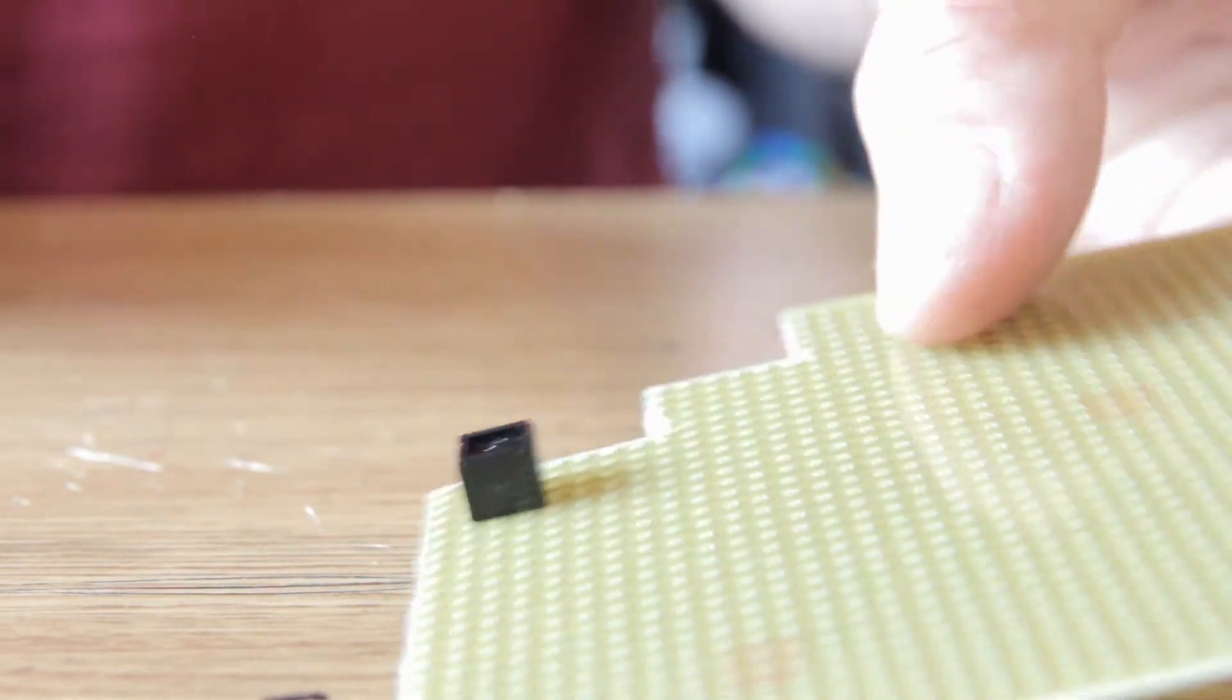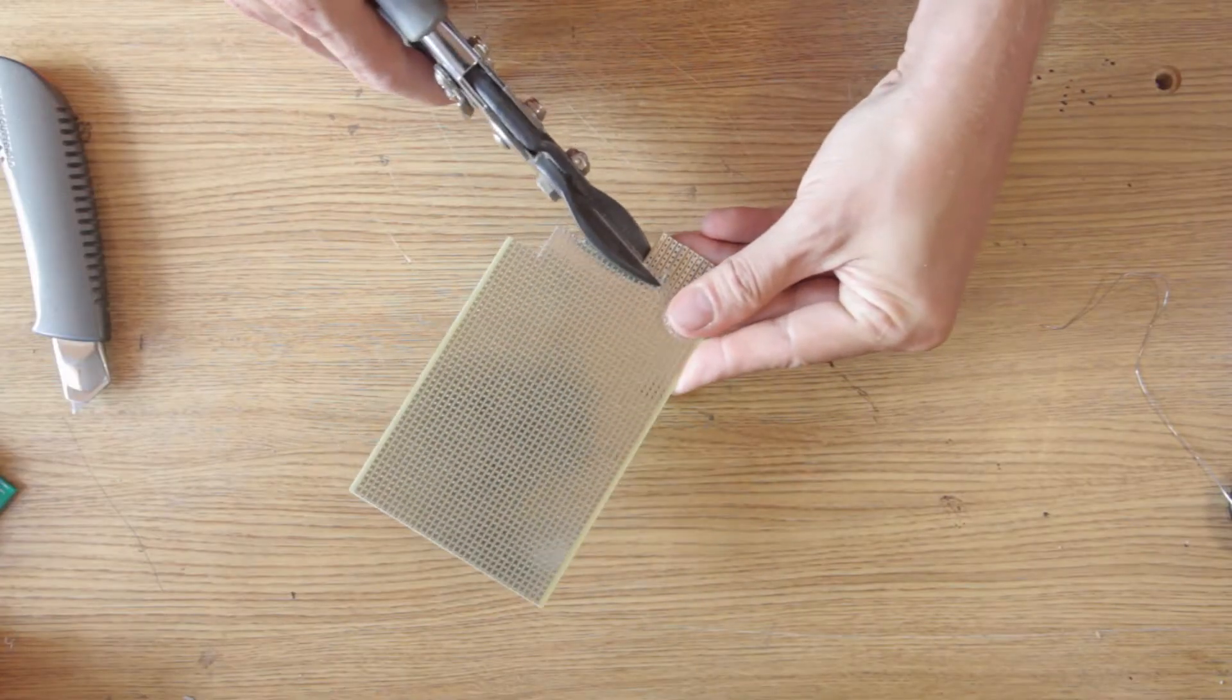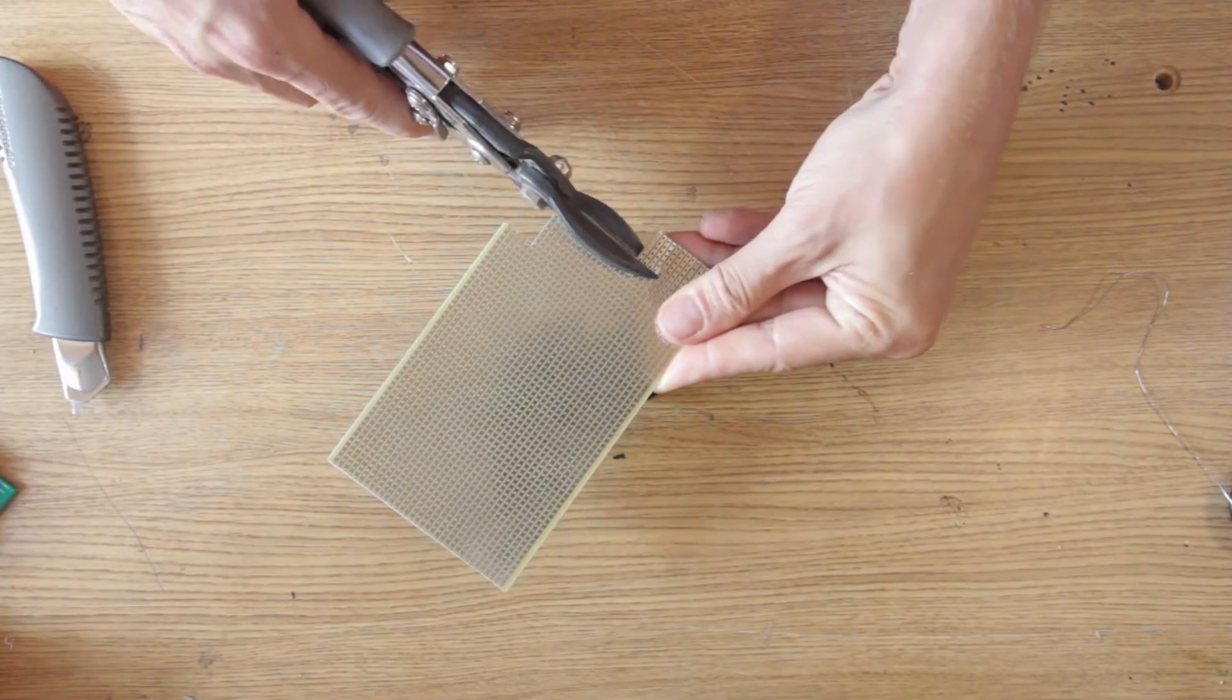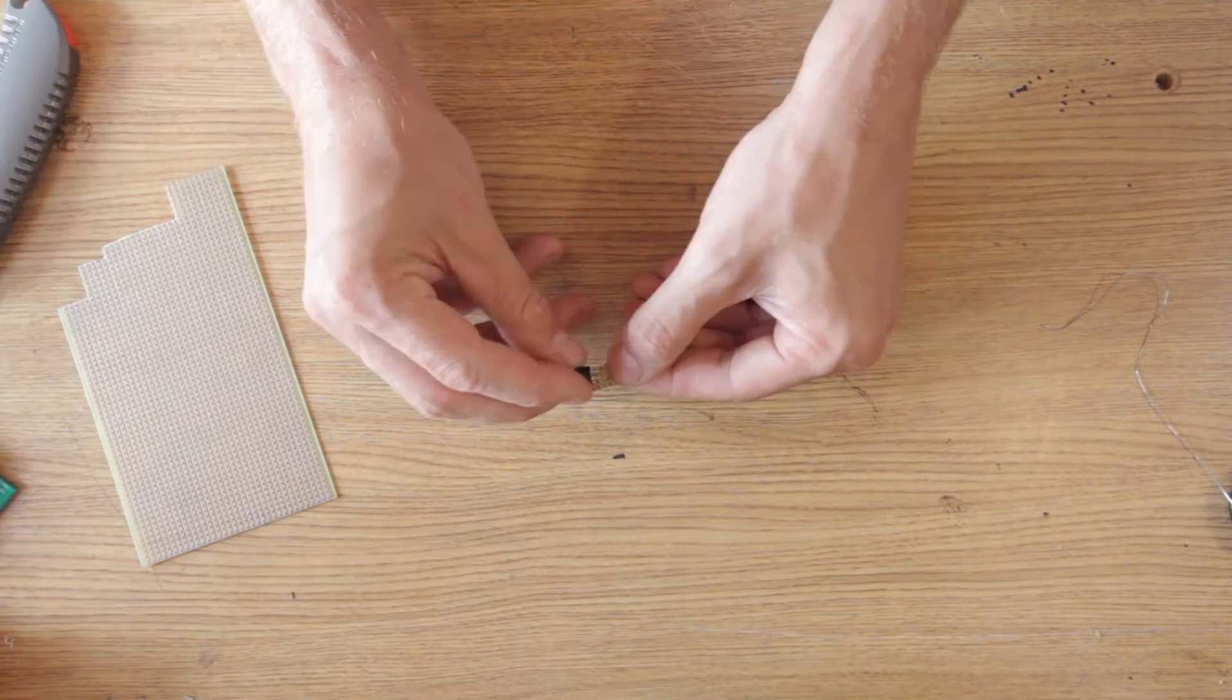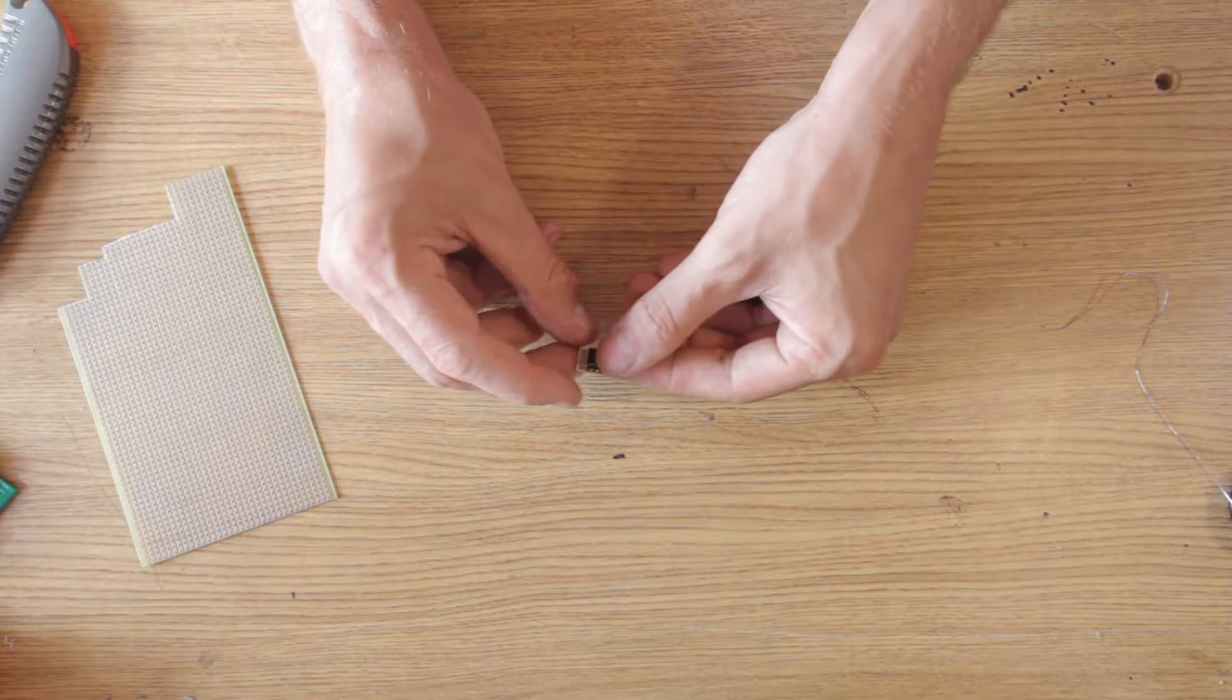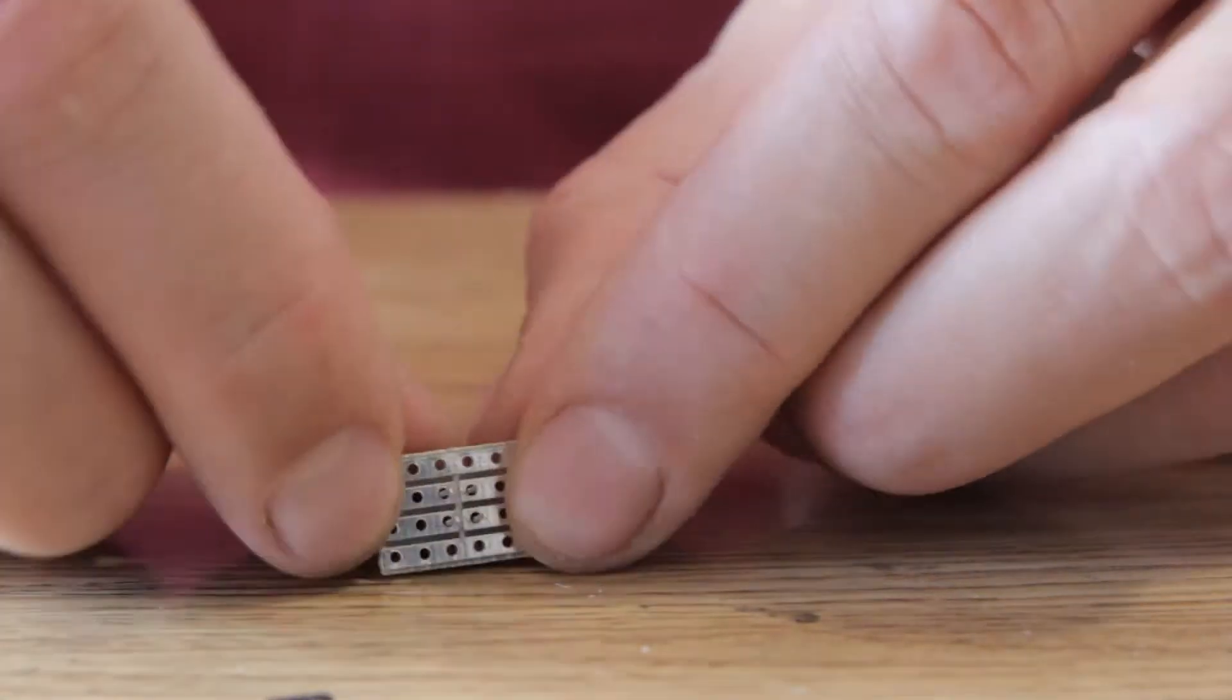As a base for the module I use a standard strip board. I need a piece which is 6 holes long and 4 holes wide. I cut through the two middle traces to electrically separate the pins of the CNY70. Now each pin has a separate strip with 2 free holes.